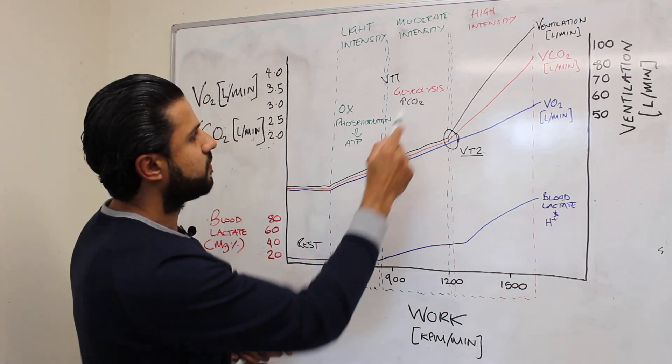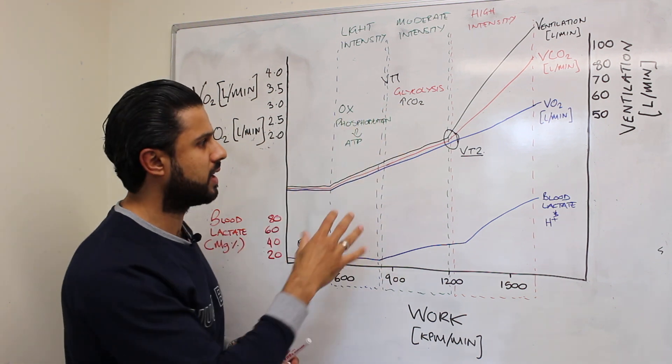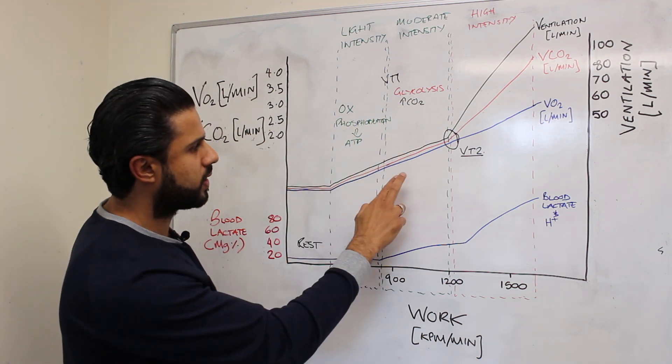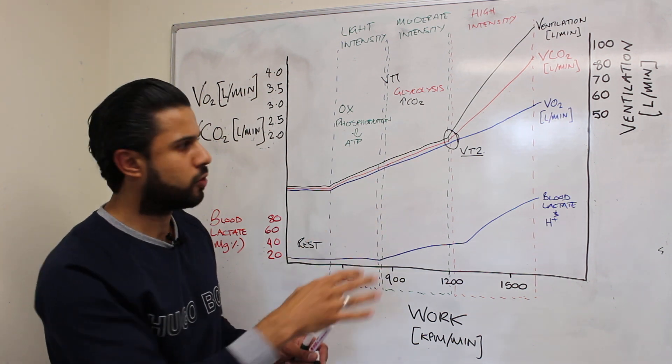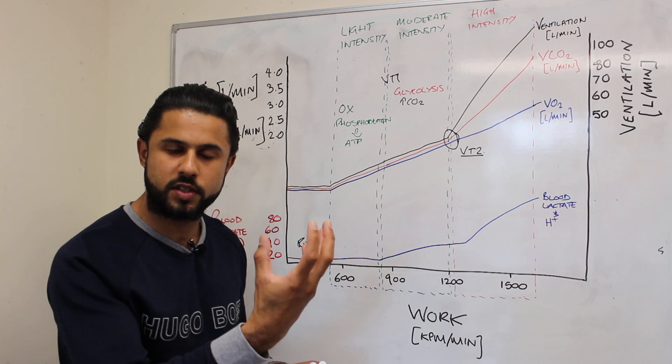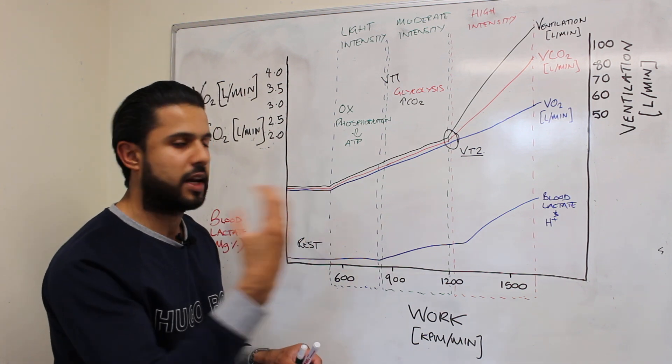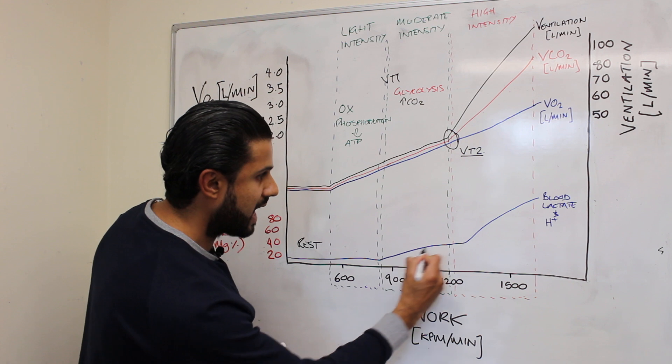Now glycolysis and oxidative phosphorylation both make a contribution to the ATP at moderate intensity but we can see that ventilation, VO2, VCO2 are still quite closely matched. So ventilation is matching the need to blow off the CO2, breathe out the CO2 and consume the oxygen but what we are seeing is an increase in the blood lactate levels.